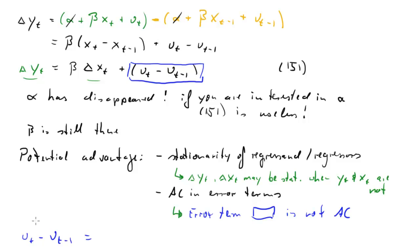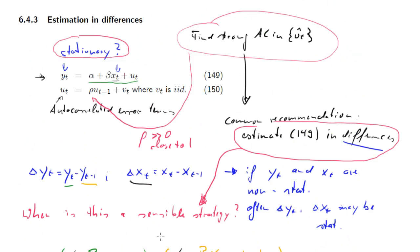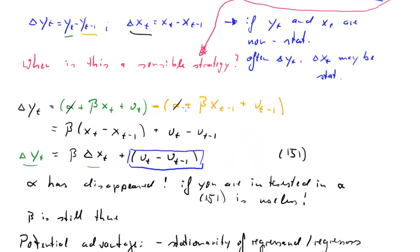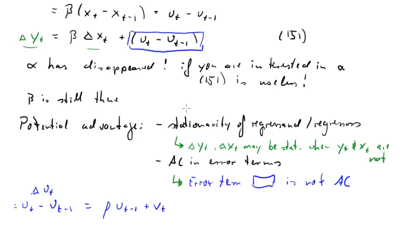So we're going to look at ut minus ut minus 1. We know from 150 we'll do the same trick as we did with the yt. What we have here is really delta ut, right? This is just the definition of the change. So we know from 150 that ut we assumed was modeled like this, rho ut minus 1 plus vt, where that vt, as we said above, vt is an IID random term. So vt has no autocorrelation, that's identically independently distributed.